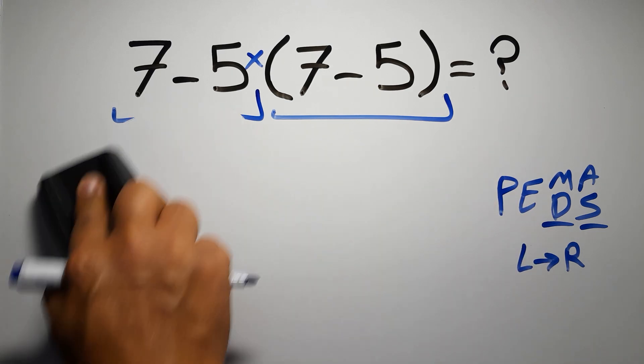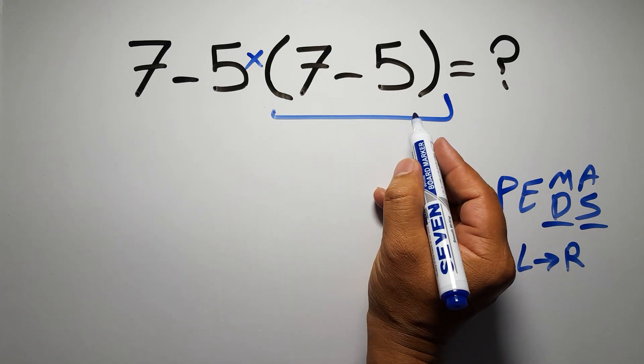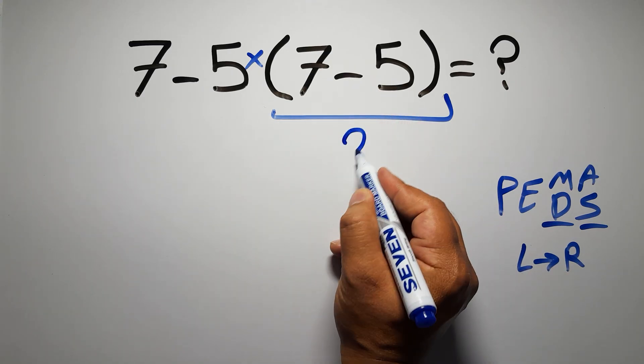so first this parenthesis, inside this parenthesis we have 7 minus 5, which equals 2,